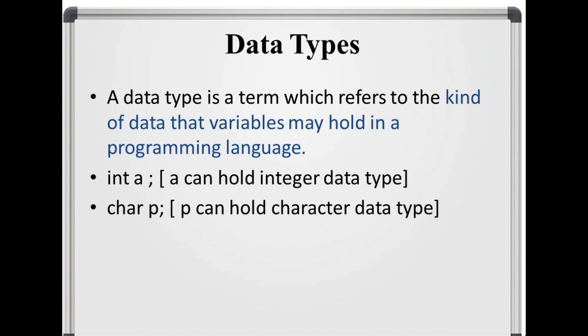when you declare int a, at that time, a can hold only integer value. When you declare char p, p is a variable holding character type value.